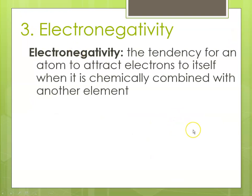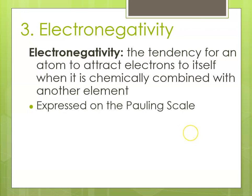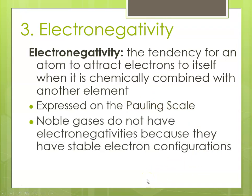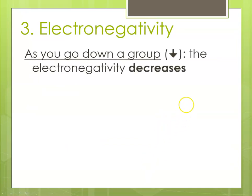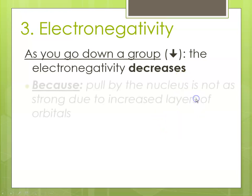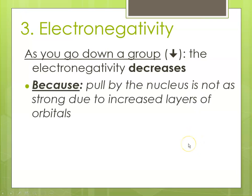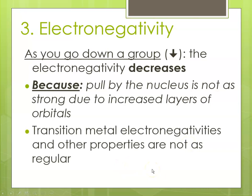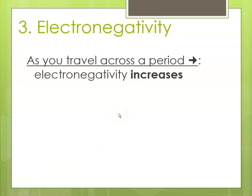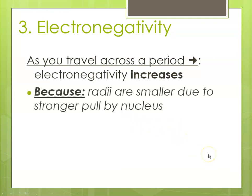Electronegativity is the tendency for an atom to attract electrons to itself when bonding. It's expressed on the Pauling scale — it's like the power of an atom. The stronger the nuclear pull, the higher its electronegativity number. Noble gases do not have defined electronegativities since they don't need to gain or lose electrons. As you go down a group, electronegativity decreases due to shielding — the pull of the nucleus is not as strong. Transition metal electronegativities are not as straightforward as for representative elements. As you travel across a period, electronegativity increases because the nucleus exerts more pull as the radius becomes smaller.